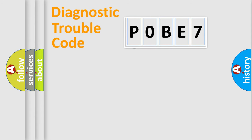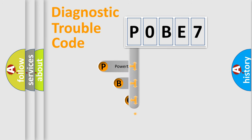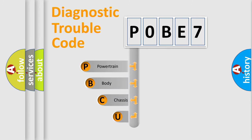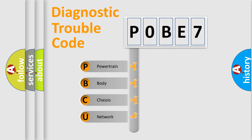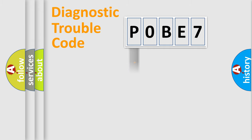First, let's look at the history of diagnostic fault code composition according to the OBD2 protocol, which is unified for all automakers since 2000. We divide the electric system of an automobile into four basic units: Powertrain, Body, Chassis, and Network. This distribution is defined in the first character of the code.